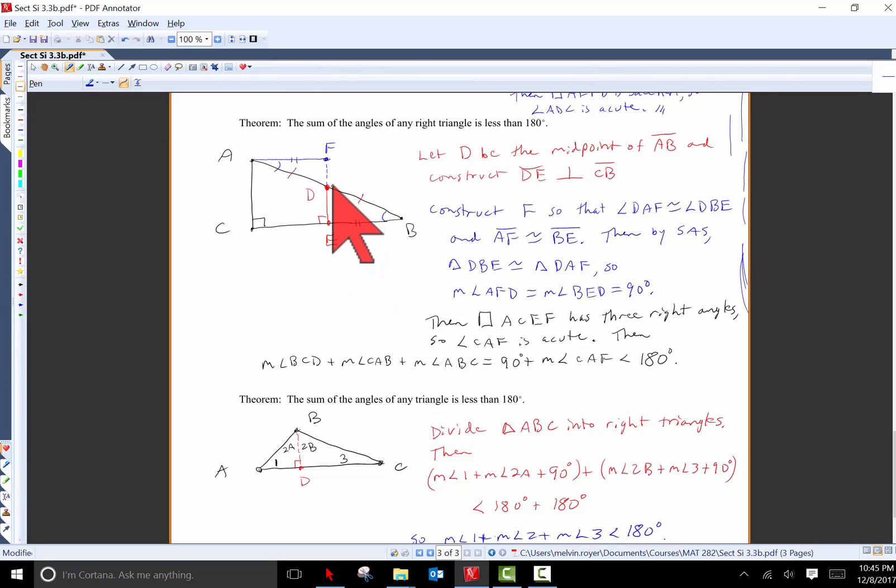And if I join F and D by side angle side, these two triangles, DBE and DAF are congruent. And so in particular, angle AFD is congruent to this right angle BED. So now that we know that the angle at F is a right angle, we have quadrilateral CEFA, which has three right angles. And so we know that its fourth angle, angle CAF has to be acute by what we just proved.